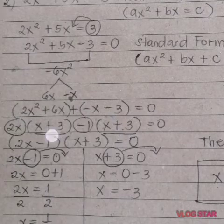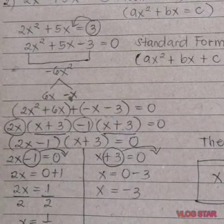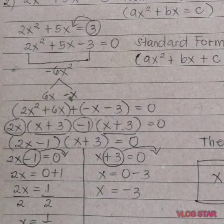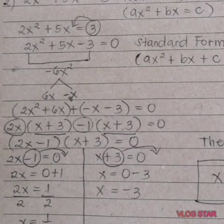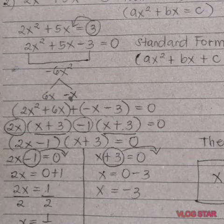Since we get the same factor x plus 3, we are arriving at the correct answer. Take x plus 3 as the common factor. The remaining terms are 2x and negative 1, which we combine. So the factored form is the quantity 2x minus 1 times the quantity x plus 3 equals 0.